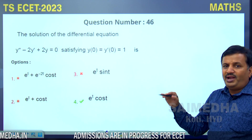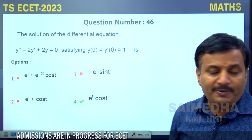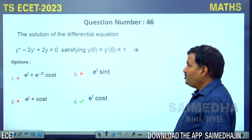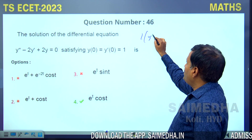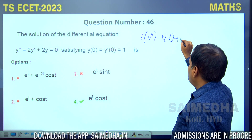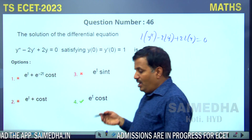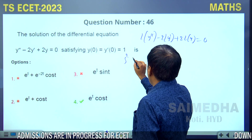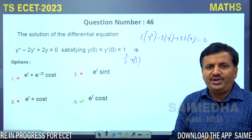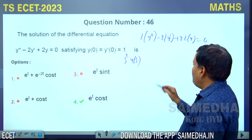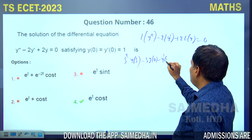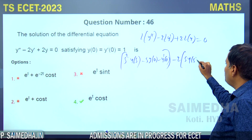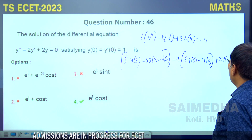For the differential equation y″ - 2y′ + 2y = 0 with y(0) = y′(0) = 1, we take Laplace transforms. Laplace of y″ = s²Y(s) - s·y(0) - y′(0). Laplace of y′ = s·Y(s) - y(0). Substituting: [s²Y(s) - s - 1] - 2[sY(s) - 1] + 2Y(s) = 0.